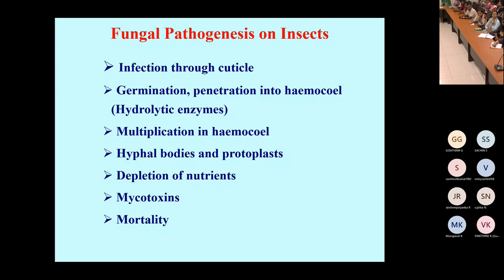The hydrolytic enzymes — chitinase and protease — play a major role in degrading the chitin of insects. The fungus then multiplies in the hemocoel, producing hyphal bodies and protoplasts, depleting nutrients, and later inducing large amounts of mycotoxin production, finally causing mortality.